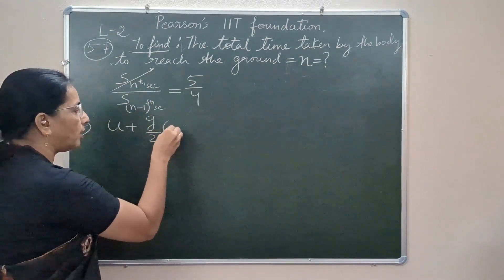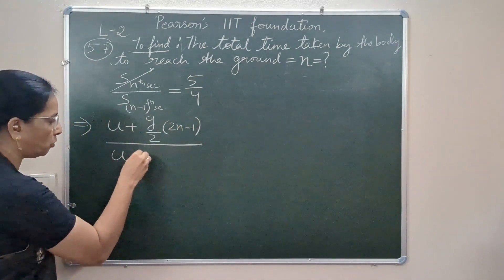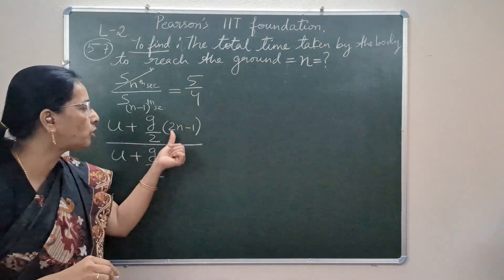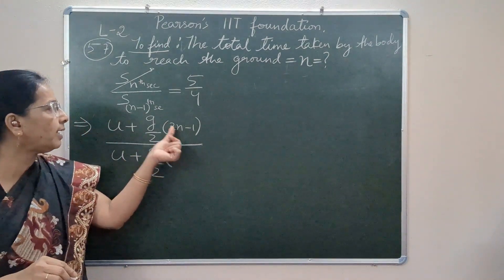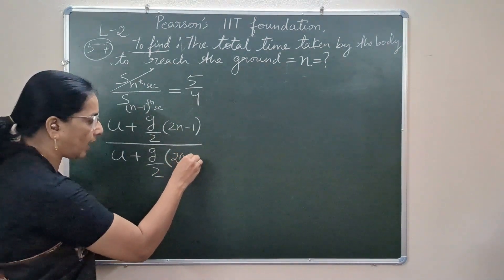Divided by u plus g by 2 times I should write here twice n minus 1, but n is actually n minus 1, so I should write here twice of n minus 1 minus 1.